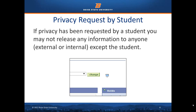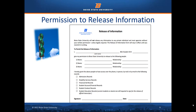If privacy has been requested by a student, you may not release any information to anyone, internal or external, except the student. A student who has requested full privacy will have a window shade displayed in our student system. Students may sign a Release of Information form — Express Written Consent — that allows for release of information to specific individuals. This form is kept on file in the Registrar's Office.